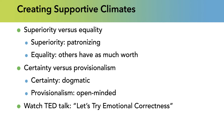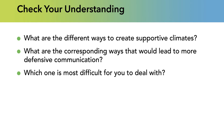There's a TED talk by Sally Kohn called 'Let's Try Emotional Correctness' where she talks about working with Sean Hannity — full disclosure, I don't care for him at all. I thought we could watch it and then discuss. The textbook does a much more thorough job explaining this than I did, but this should be a good overview. Check your understanding: what are the six different ways to create supportive climates, and what are the corresponding ways that lead to more defensive communication?